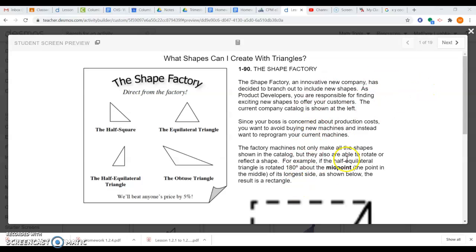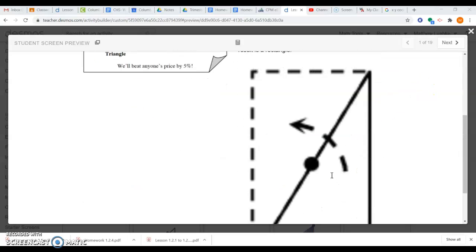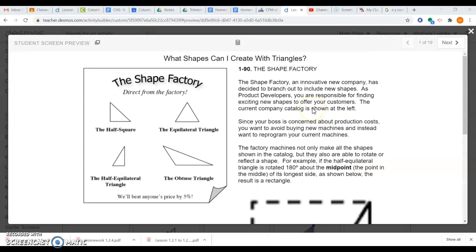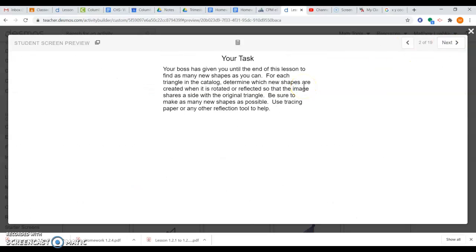It starts here by explaining a couple things. It explains midpoint, which again is just the point in the middle of a line. And then it goes into our task. We are given until the end of the lesson to take each triangle in the catalog and determine how many new shapes can be created when rotated or reflected. So we're trying to get as many new shapes as possible by just using rotations and reflections on these triangles.